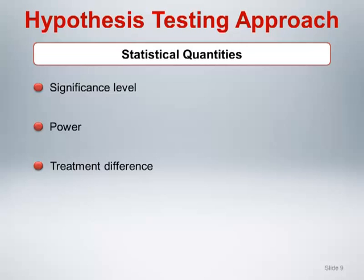Selecting too large an effect size will result in a smaller calculated sample size, but can result in an underpowered study if the intervention is unable to deliver the specified treatment effect. Lastly and importantly, an estimate of the variability in the outcome under study is also required. This value should be based on pilot data or estimates published in the literature in similar populations to those proposed for the study.